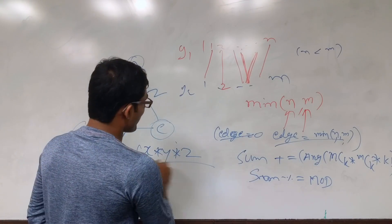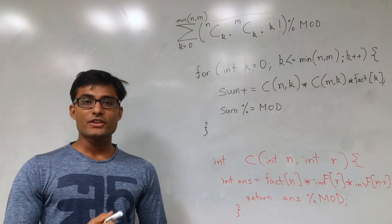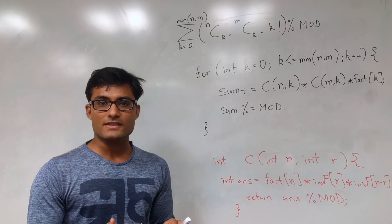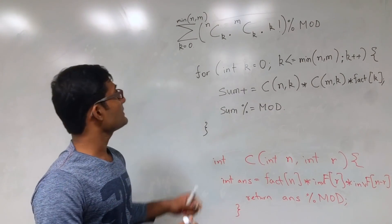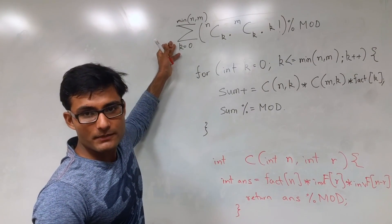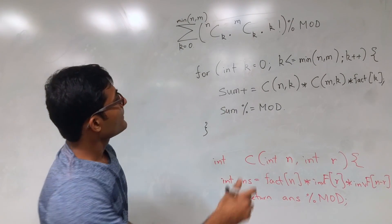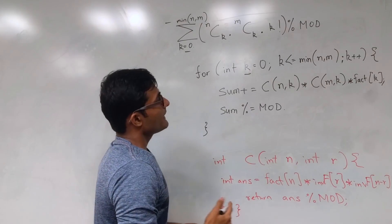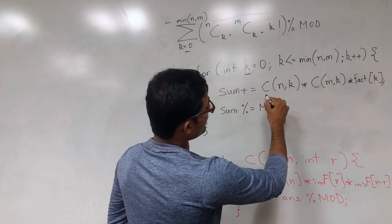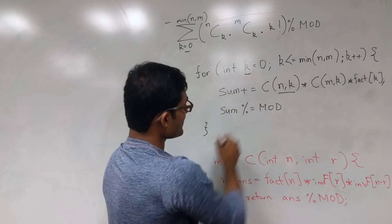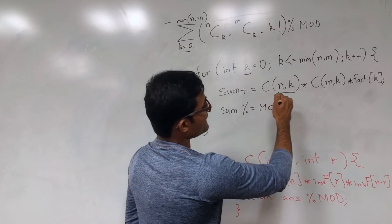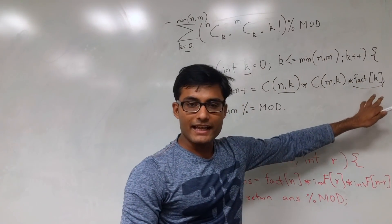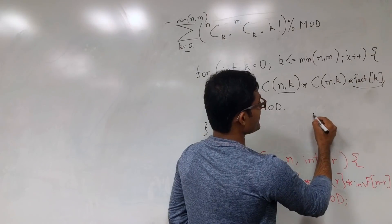Now let's go through the important functions to solve this problem. The formula we derived is: sum over K from 0 to min(N, M) of NCK × MCK × K!. This edge loop starts from K=0 to min(N, M). There is an NCK function defined, and we multiply NCK, MCK, and fact[K] — where fact is a precomputed factorial array returning K factorial.